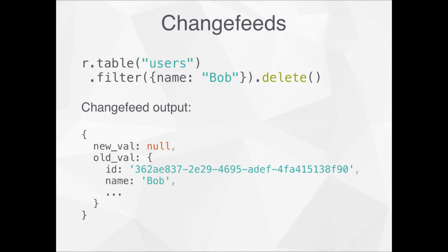You also get the new value of a document if it's updated, as well as the old version of what it looked like up until a moment ago. So if we have a users table and we wanted to say Bob's no longer part of our users and delete them, down at the bottom is what you would get if you were currently listening on a change feed. You can see that the new value is null because we've deleted them, but the old value is the document that used to exist there.